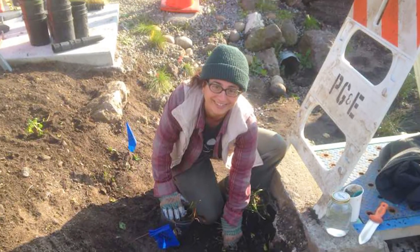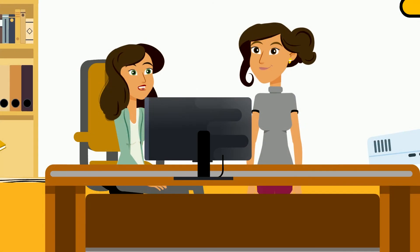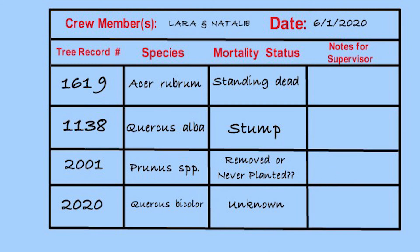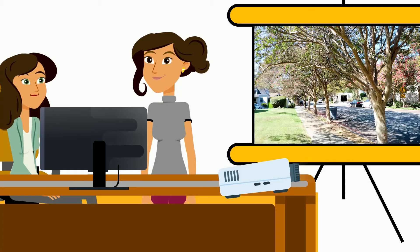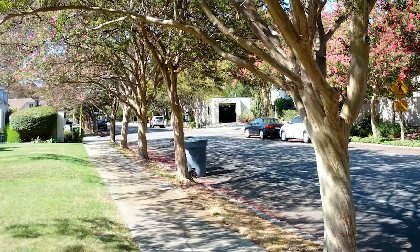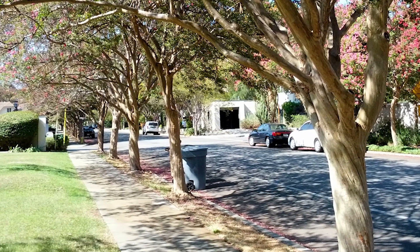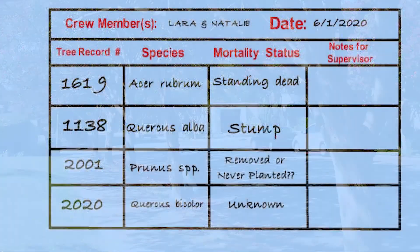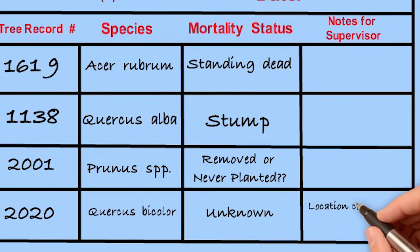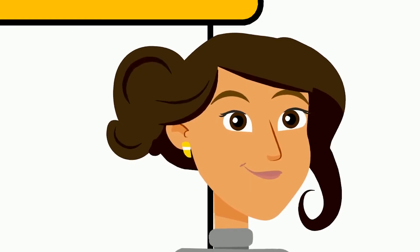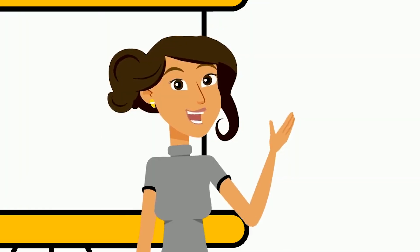A final category in mortality status is unknown. Sometimes trees are inaccessible due to property access or construction, or maybe the location information is not good enough to tell which tree is part of the study. Careful notes should be taken to explain what happened so that the project supervisor can decide how to deal with the tree when it comes time to analyze the data.